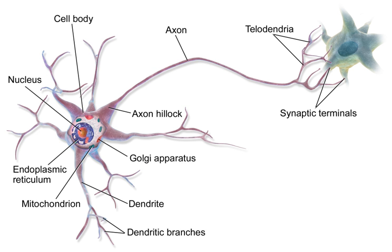Like all animal cells, the cell body of every neuron is enclosed by a plasma membrane, a bilayer of lipid molecules with many types of protein structures embedded in it. A lipid bilayer is a powerful electrical insulator, but in neurons, many of the protein structures embedded in the membrane are electrically active. These include ion channels that permit electrically charged ions to flow across the membrane and ion pumps that chemically transport ions from one side of the membrane to the other.